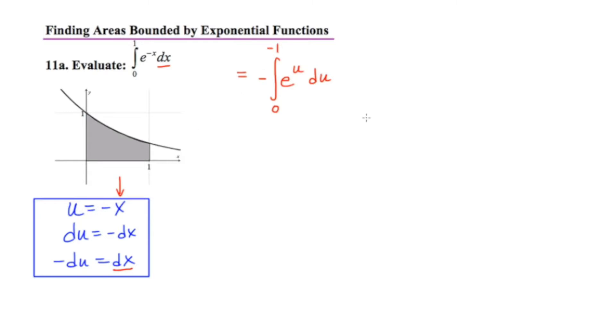And this is great except our limits of integration are in the wrong order. You're always supposed to have the smaller number on the bottom. But we can fix that by turning it upside down and negating our integral. So let's remove the negative and make it go from negative 1 to 0, e to the u du.